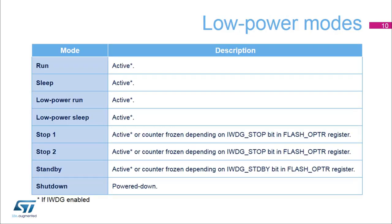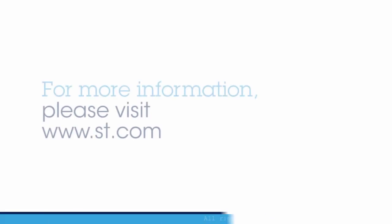The IWDG can be active in all running and low power modes except in shutdown mode, where it is powered down. Nevertheless, in stop 1, stop 2, and standby modes, the watchdog counter can be frozen by programming the corresponding bits in the FLASH OPTR register.